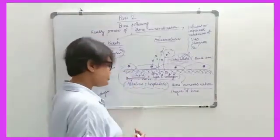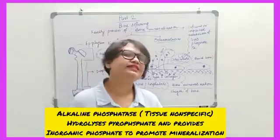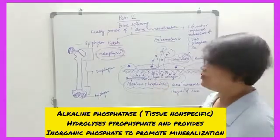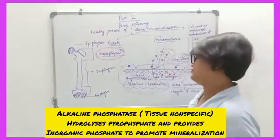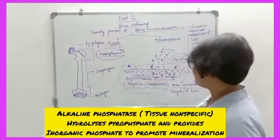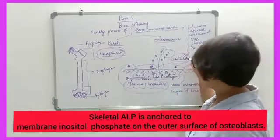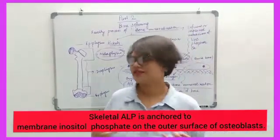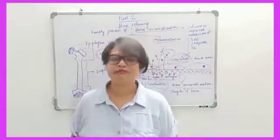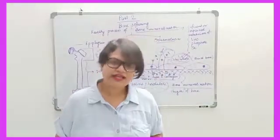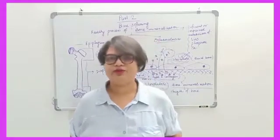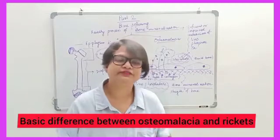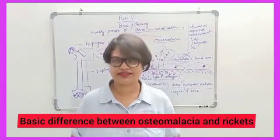There is an enzyme called alkaline phosphatase. This alkaline phosphatase enzyme has an important role in bone mineralization, and its activity is dependent upon these osteoblast cells. We have discussed this process in a very brief manner. Now I would like to tell you some important points about osteomalacia and rickets. What is the basic difference between these two diseases?